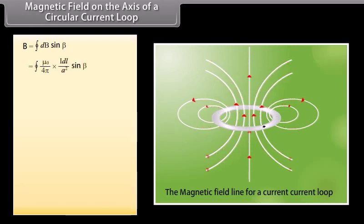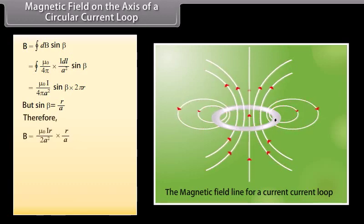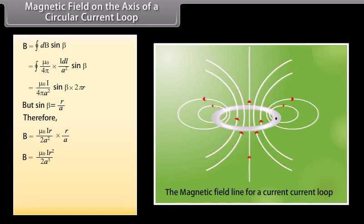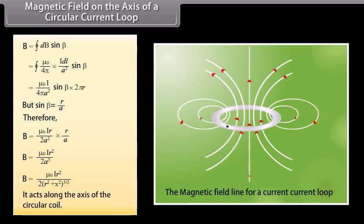By putting the values into this equation, the total magnetic field at P is equal to μ₀I/(4π·A²) multiplied by sinθ and 2πR. Since sinθ = R/A, the total magnetic field at P is μ₀IR² / (2A³), which can also be written as μ₀IR² / (2(R² + x²)^(3/2)). This magnetic field acts along the axis of the circular coil.